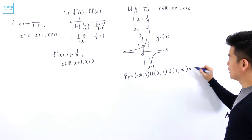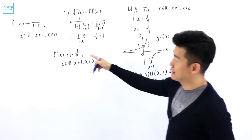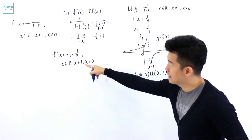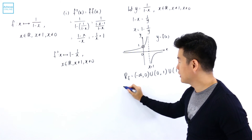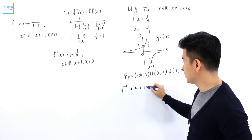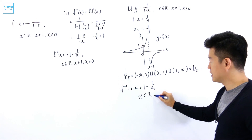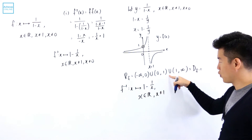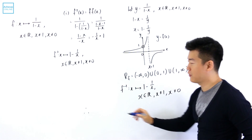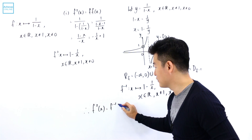Basically, the range of f is the same as the domain of f⁻¹, and this is exactly the same as the domain of f²(x) — all real numbers except x cannot be equal to 0 and x cannot be equal to 1. That is why f⁻¹(x) takes the expression 1 minus 1 over x with the same domain, and we can conclude that f²(x) is equal to f⁻¹(x).